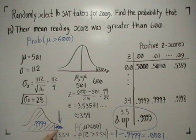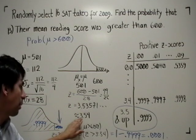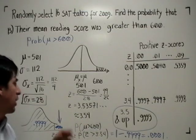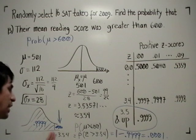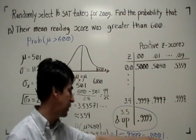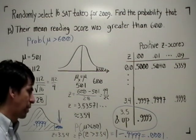So I look for the probability that Z is greater than the z-score for 600, which is approximately 3.54. And when I use my table, I find the area to the left, the probability that Z is less than 3.54. So I subtract that from 1 to get the area to the right, the probability that Z is greater than 3.54.